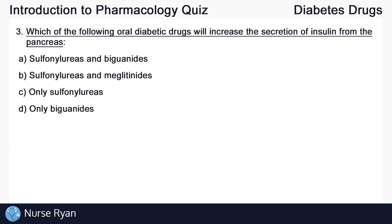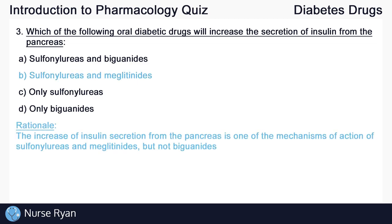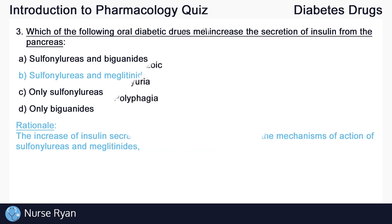Moving on to question number three: which of the following oral diabetic drugs will increase the secretion of insulin from the pancreas? The answer here is B, sulfonylureas and meglitinides. The increase of insulin secretion from the pancreas is one of the mechanism of actions of these drugs, but not of biguanides.